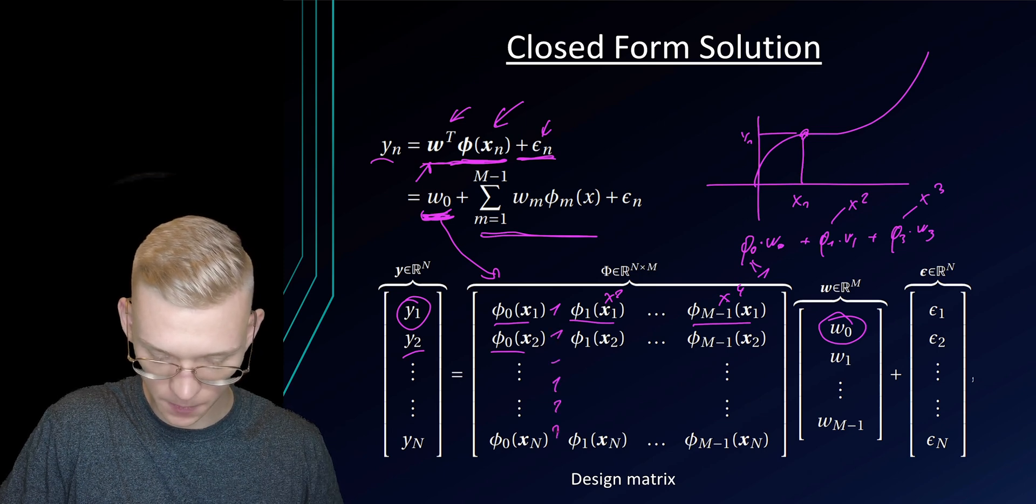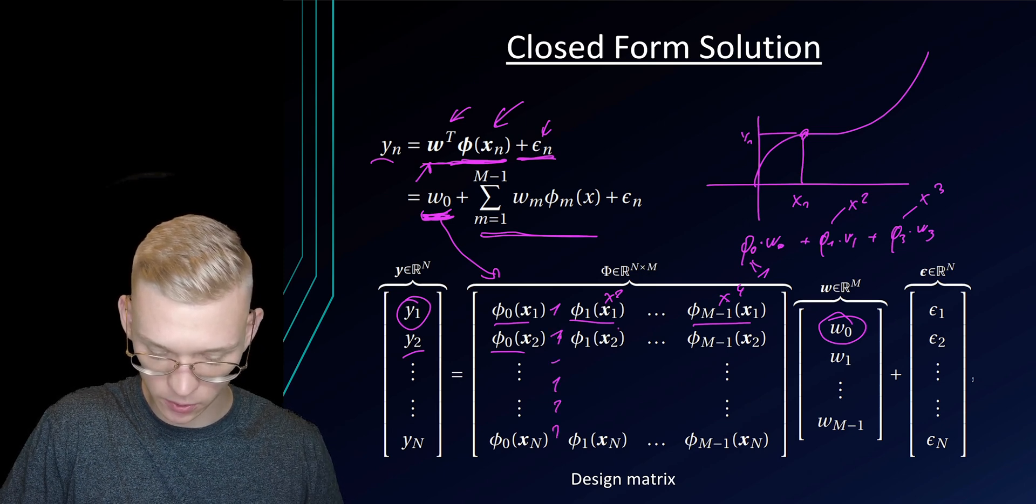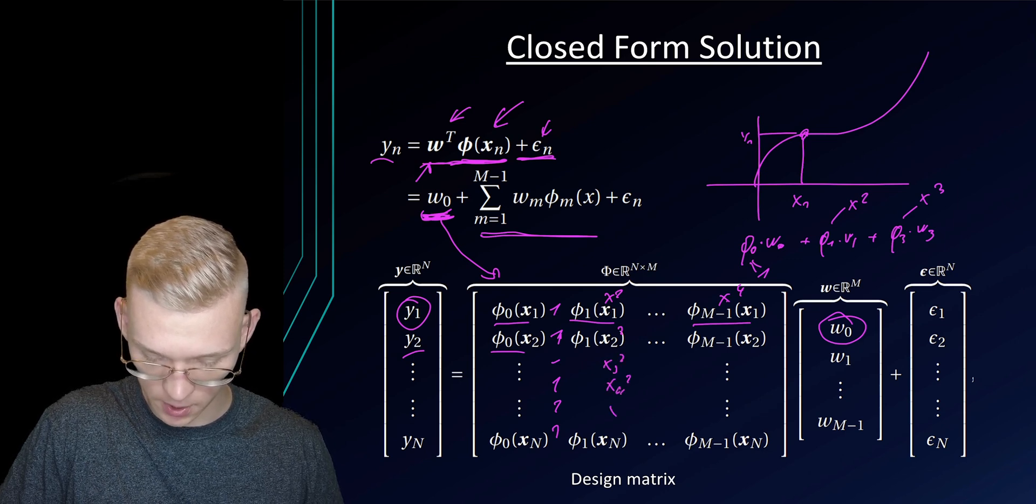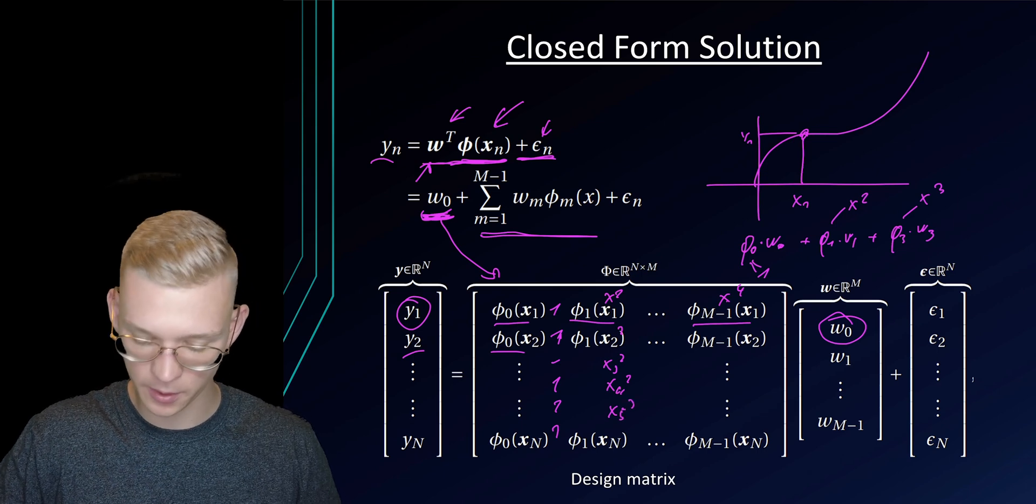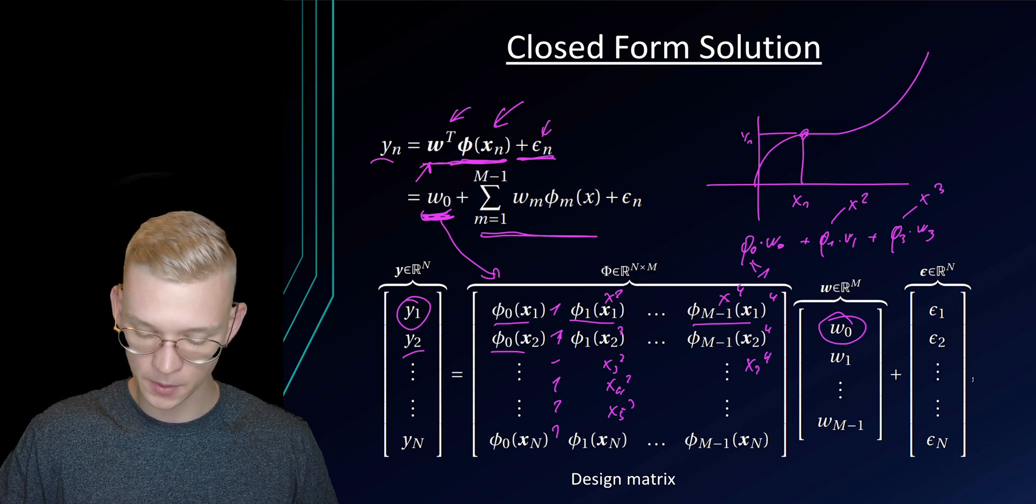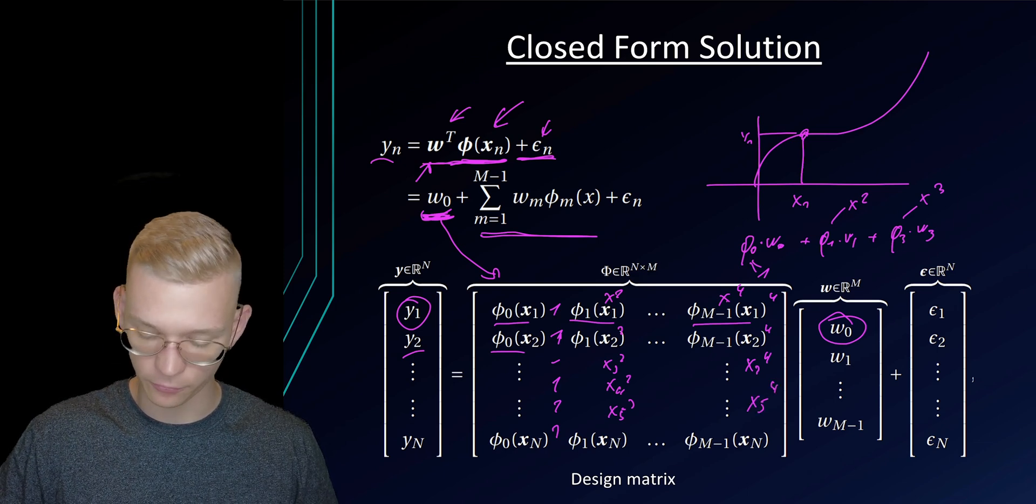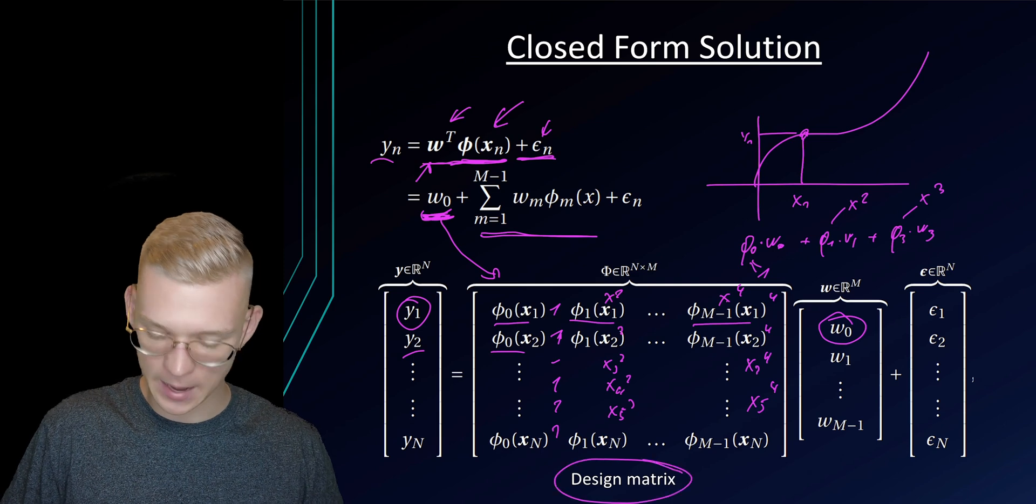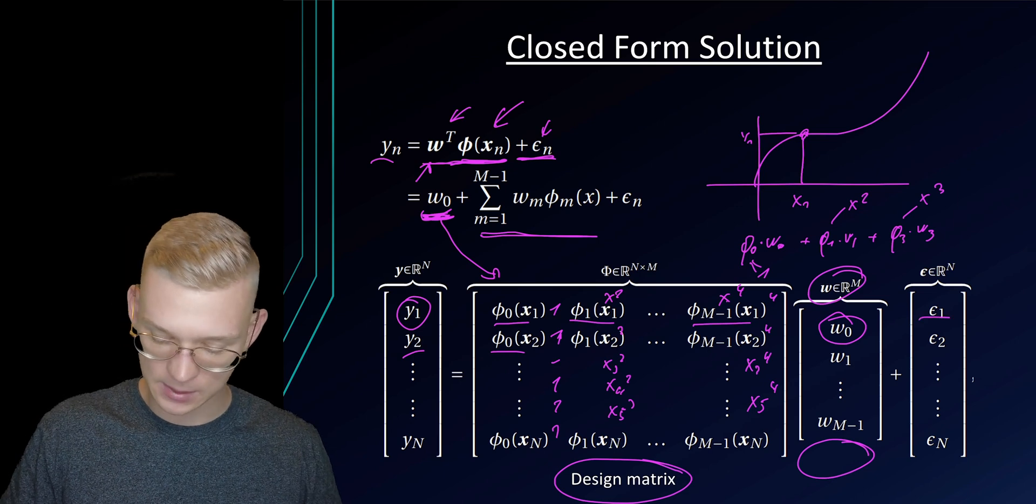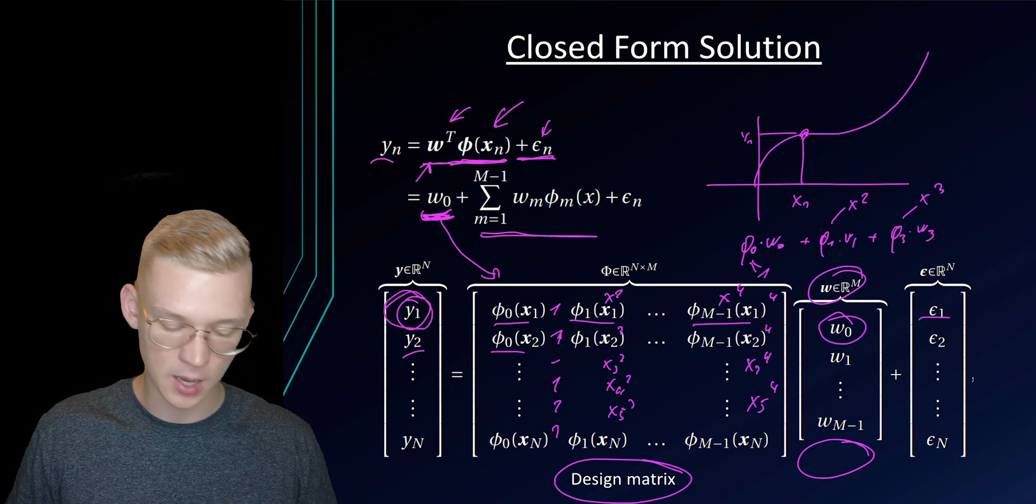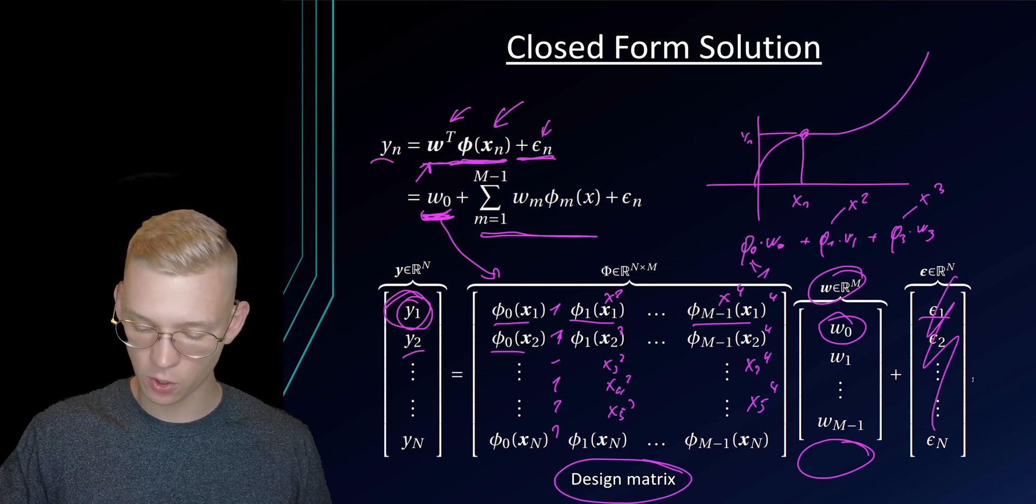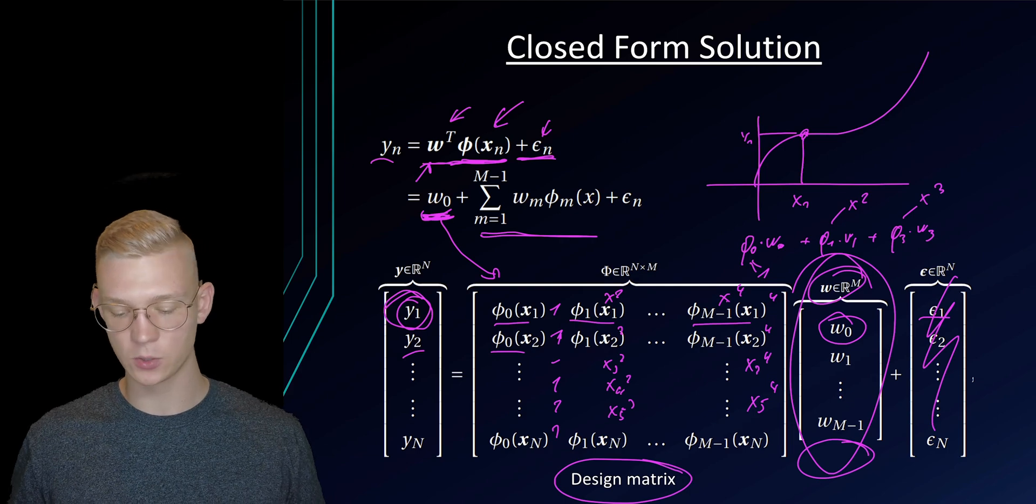Here we will insert or cube our inputs. So this will be x3 cubed, x4 cubed, x5 cubed and so forth. And this will be x3 to the power of 4, to the power of 4, and so forth, to x5 to the power of 4. So we are building a design matrix that we can multiply with our weights, parameters w, add some noise and this will be our parameters y.